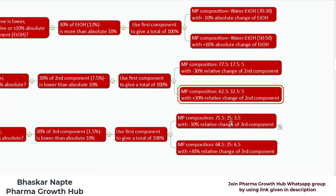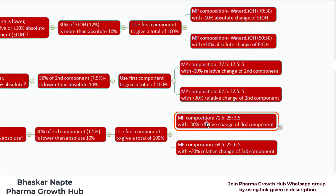The mobile phase composition is 71.5 : 25 : 3.5 with minus 30% relative change of the third component. The 30% of the third component is 1.5, so the original quantity 5 minus 1.5 becomes 3.5. As 1.5 is reduced from the third component, I need to increase 1.5 for the first component, which becomes 70 plus 1.5 equal to 71.5. This is the first mobile phase composition.